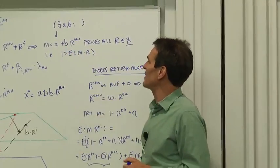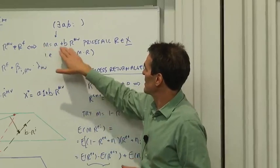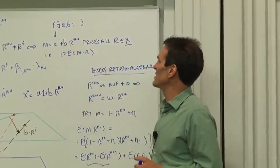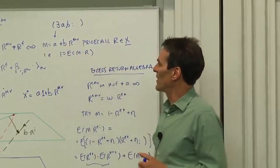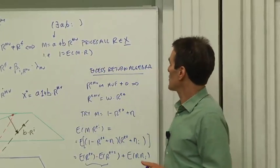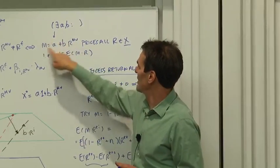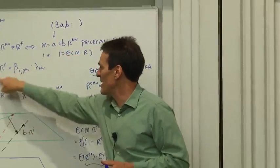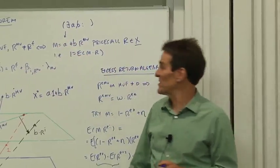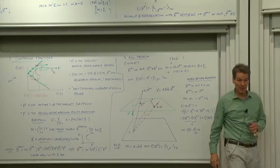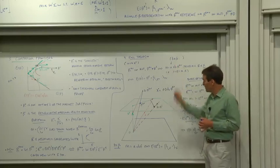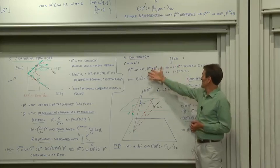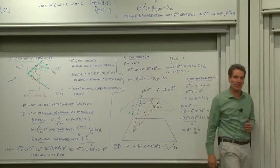In other words, I can find an A and a B such that there's a discount factor linear in the mean variance efficient portfolio and then 1 equals E of MR. Of course you know once you've found a linear M that's the same thing as an expected return beta representation. That little bit of algebra we've done a couple of times so you should be able to get back and forth there. So mean variance efficiency carries all that pricing information.